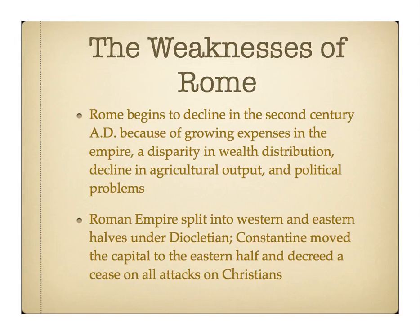It got so bad that the empire eventually had to be split into western and eastern halves, and we saw Emperor Diocletian do that. He established the western half and an eastern half. Constantine, the emperor, moved the capital to the eastern half. He also decreed a cease on all attacks on Christians, which doesn't sound that consequential — but if you consider it, Christianity was rampantly on the rise. If Christians now had a free pass to preach Jesus's message without fear of retaliation or persecution, you can connect the dots — Christianity would get stronger and stronger as Rome got weaker and weaker.